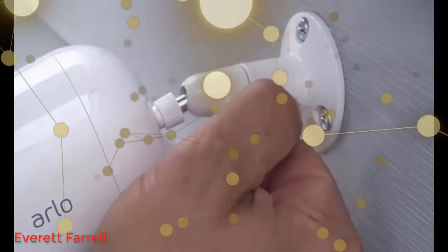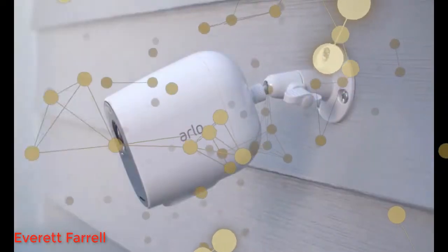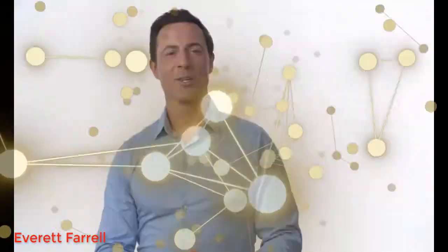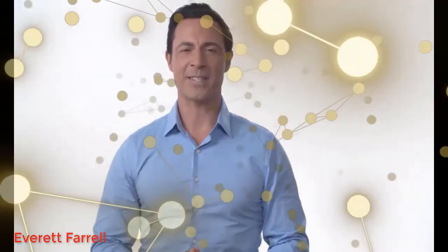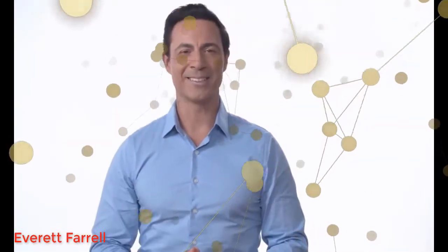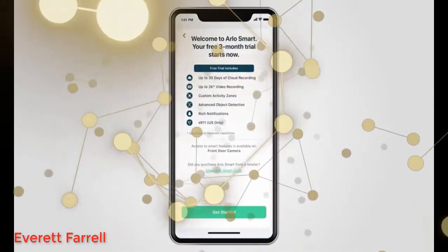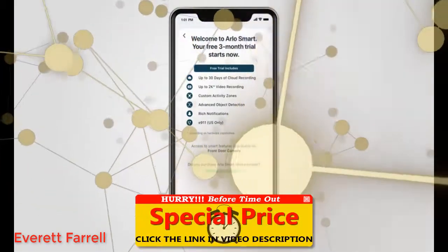You can adjust the angle by turning the thumbscrew counterclockwise. Once you've positioned your camera to the desired angle, turn the thumbscrew clockwise to lock the position in place. When your camera is mounted, select continue and the app will prompt you to set up a free trial of Arlo Smart. The Arlo app will guide you through the easy setup of your included smart trial.